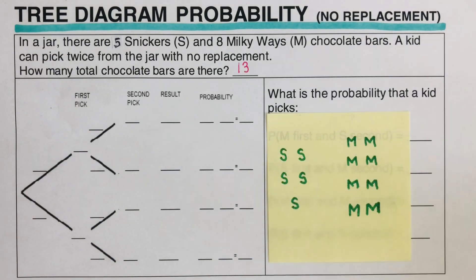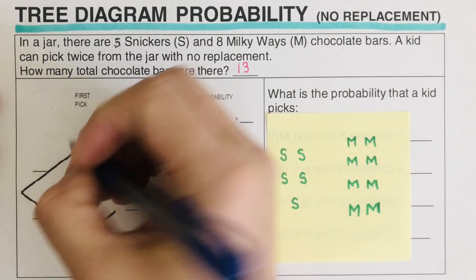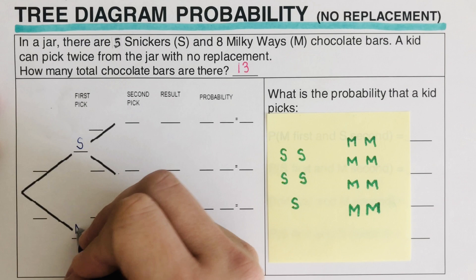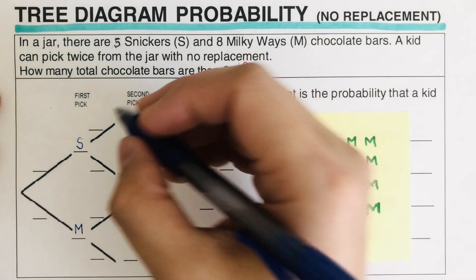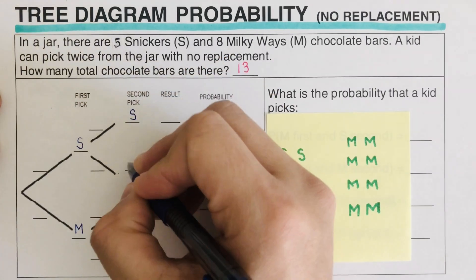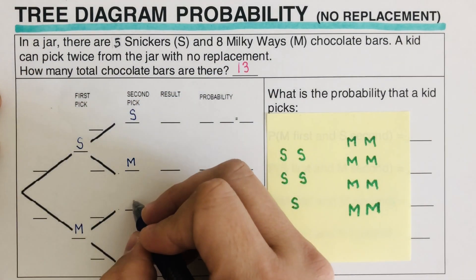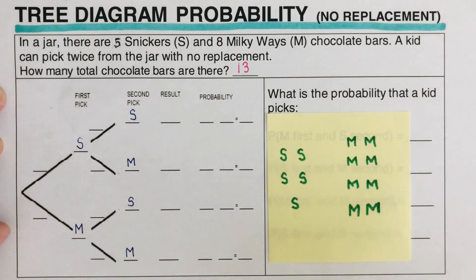This is how we fill in the tree diagram. First, we fill in Snickers on the first pick — S represents Snickers and M represents Milky Way. Then on the second pick it's the same: Snickers and Milky Way on each branch.